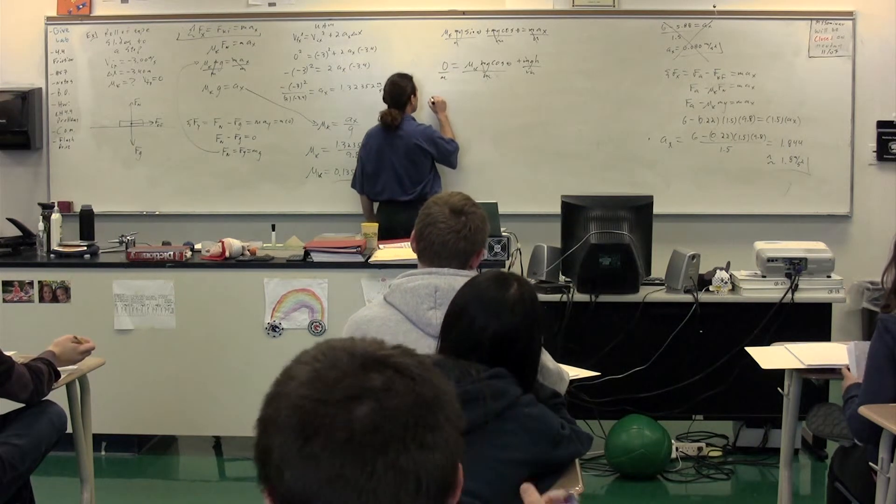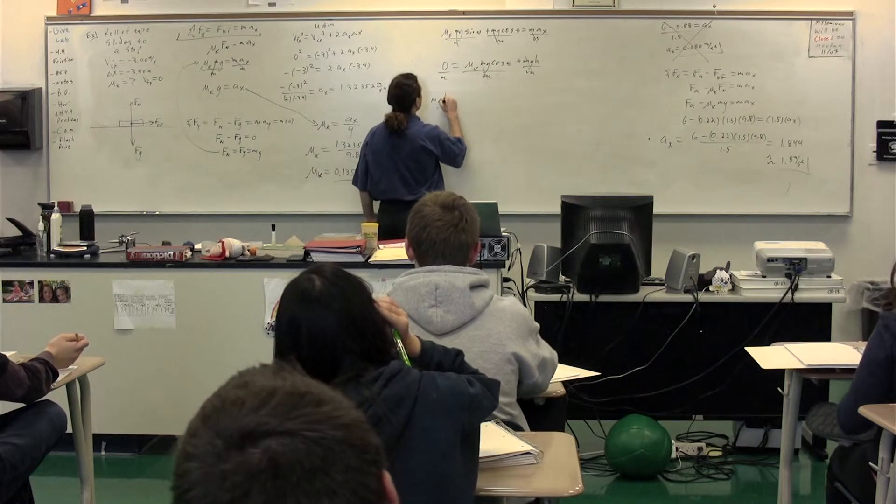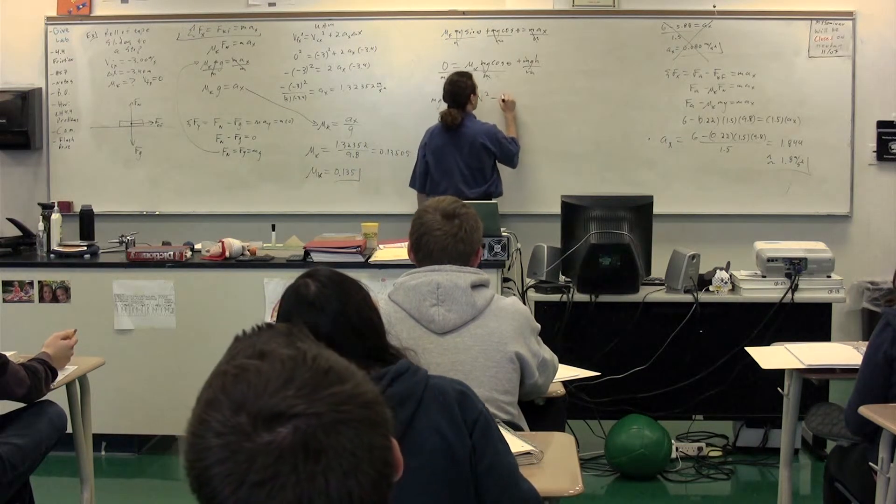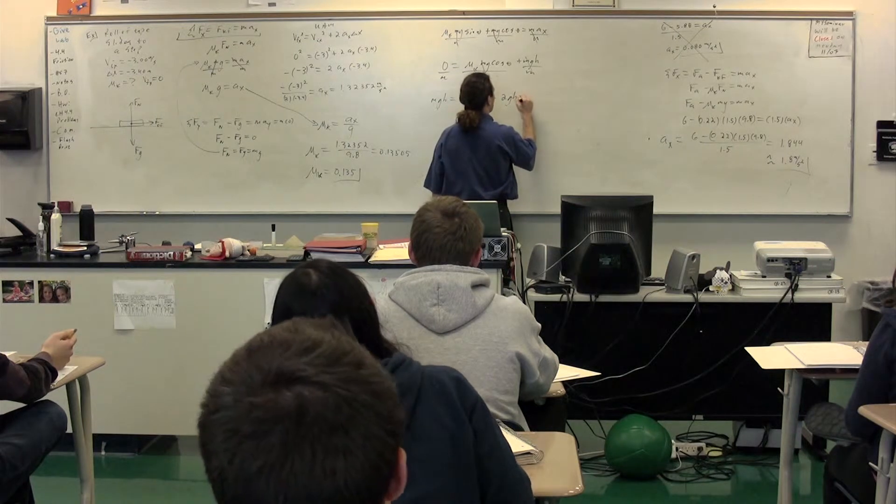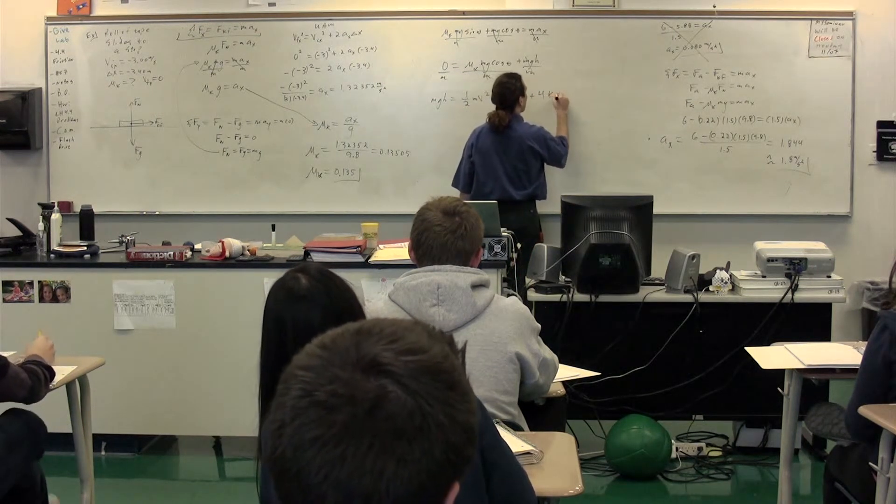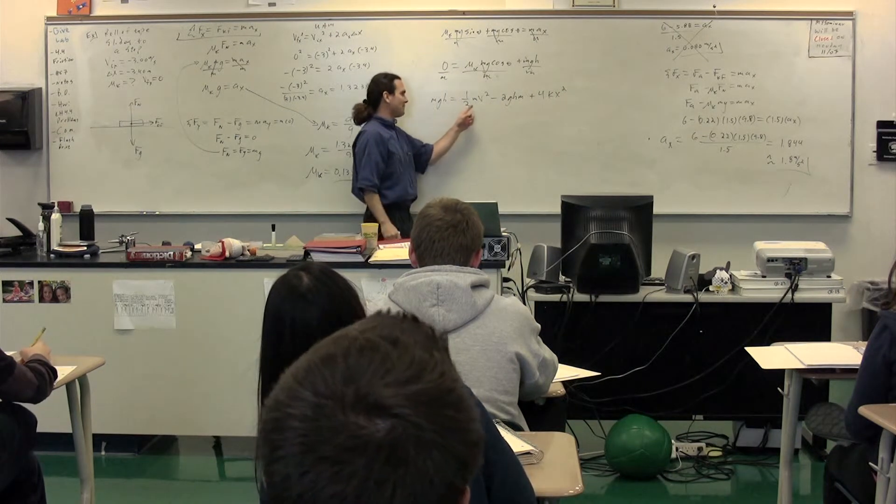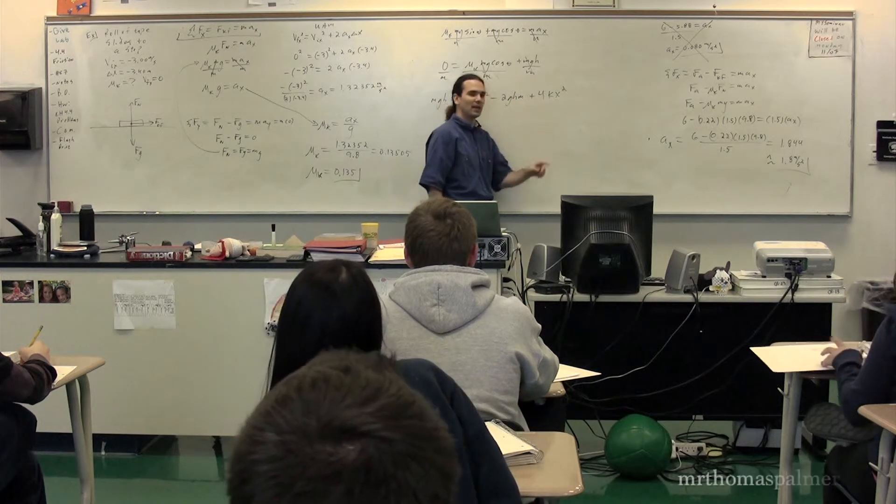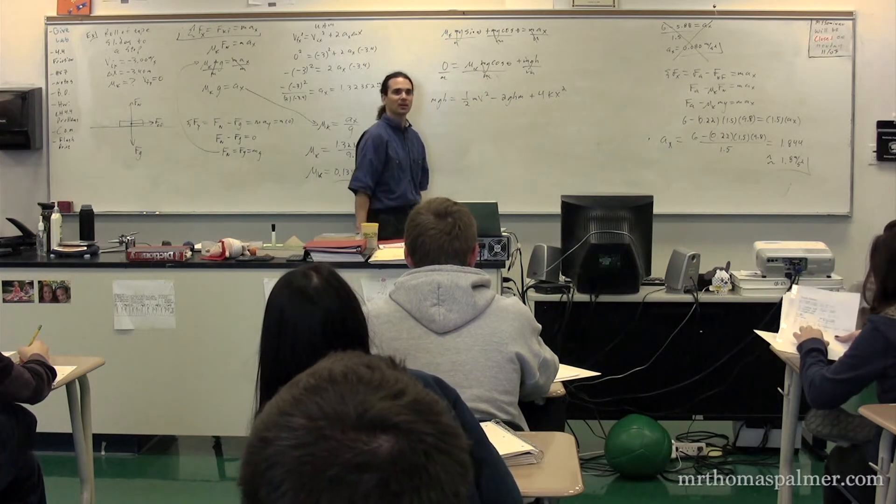All right, let's see. Mgh equals one-half mv squared minus 2ghm plus 4kx squared. Did everyone bring mass to the party? No.